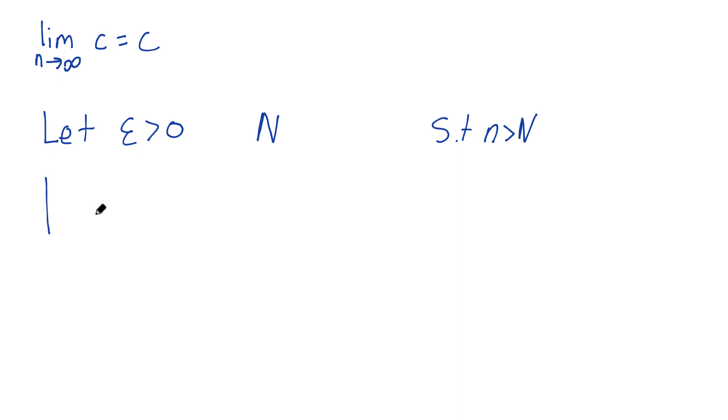The absolute value of the sequence, what's the sequence? Well, I'm just letting it be c, c is a constant here, minus its limit. Well, what's its limit? Its limit is going to be c, it's going to be its own thing. This in absolute value is supposed to be less than epsilon.